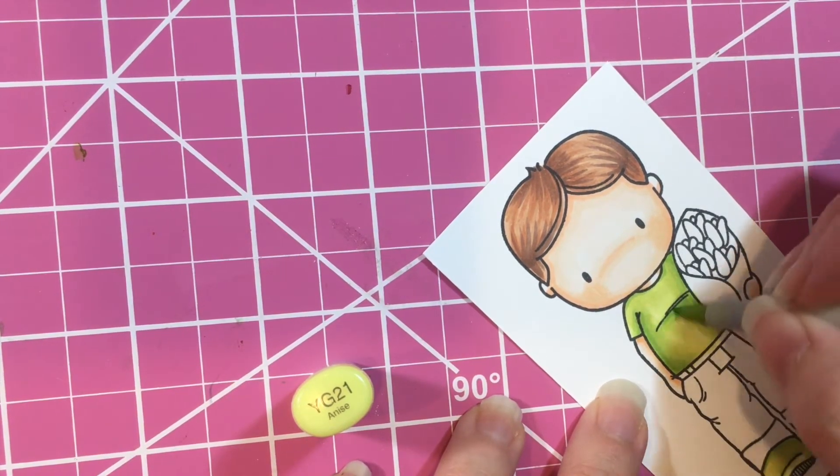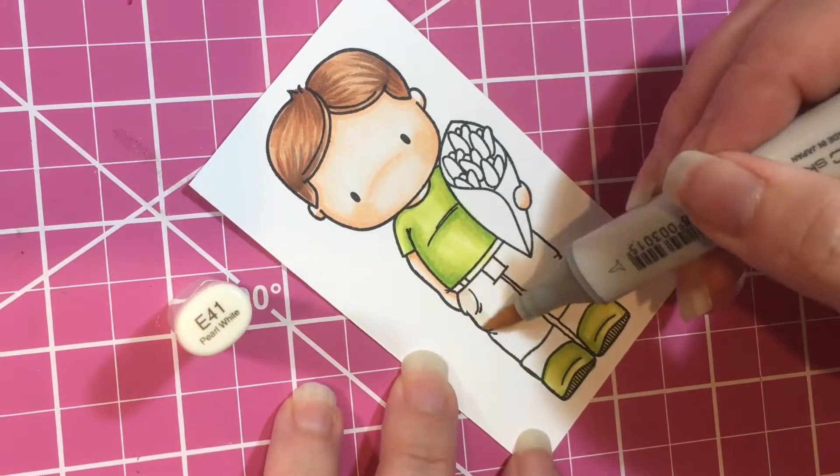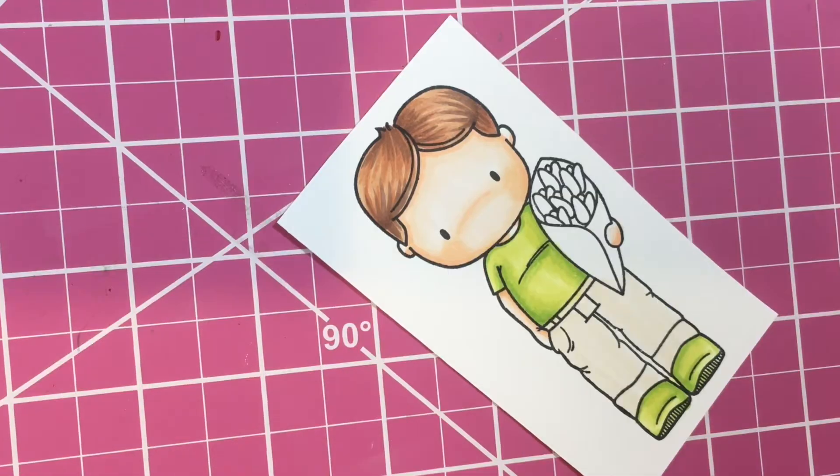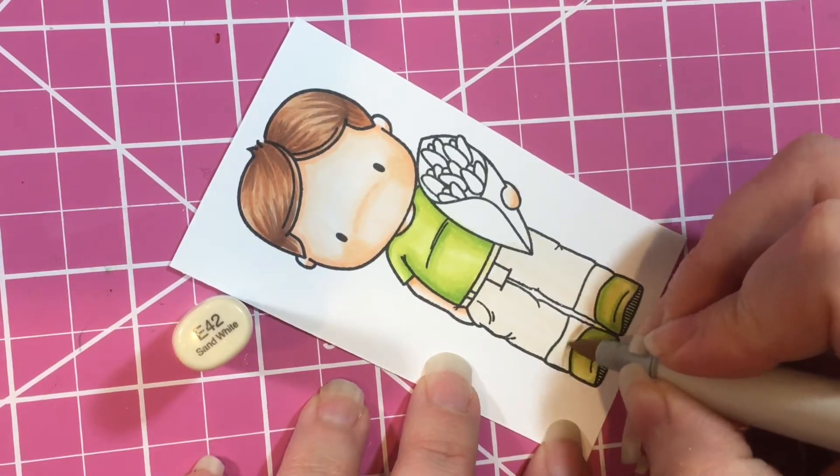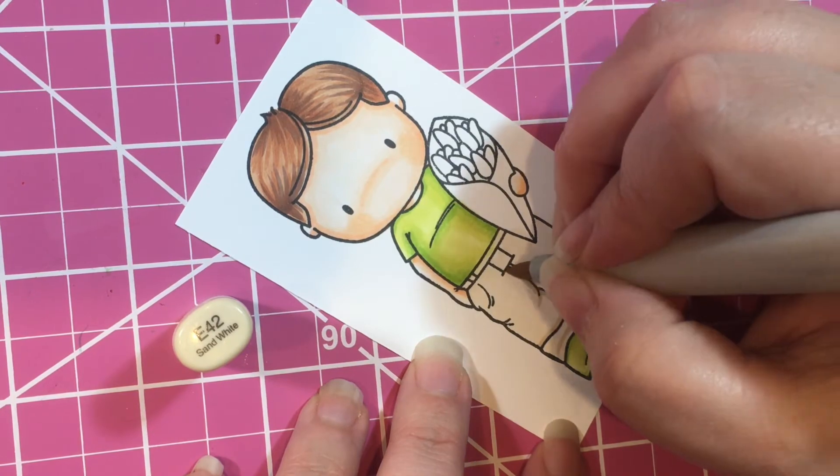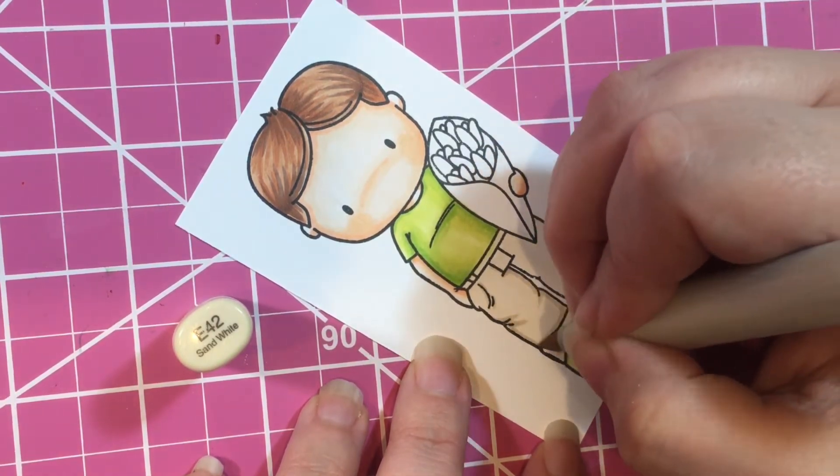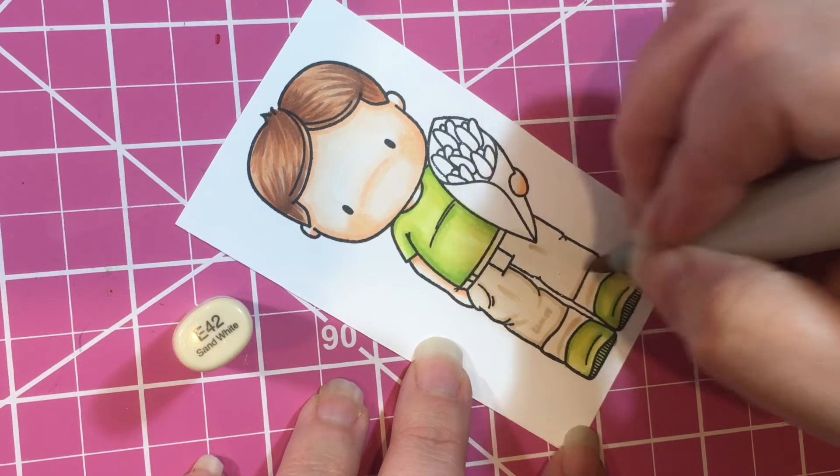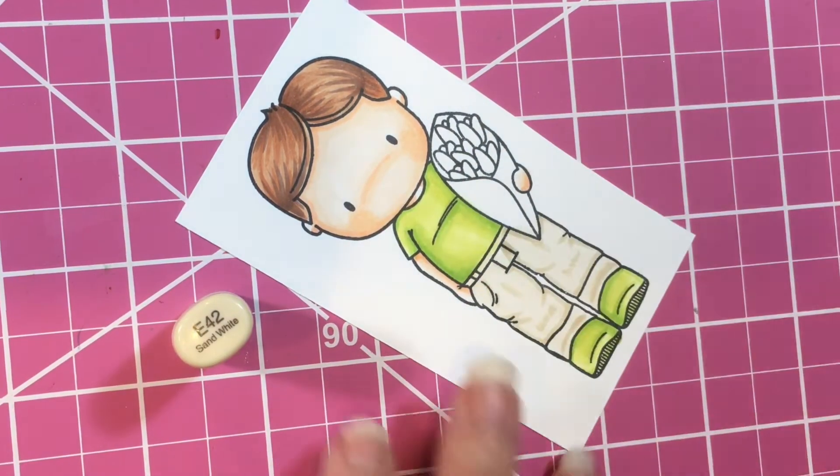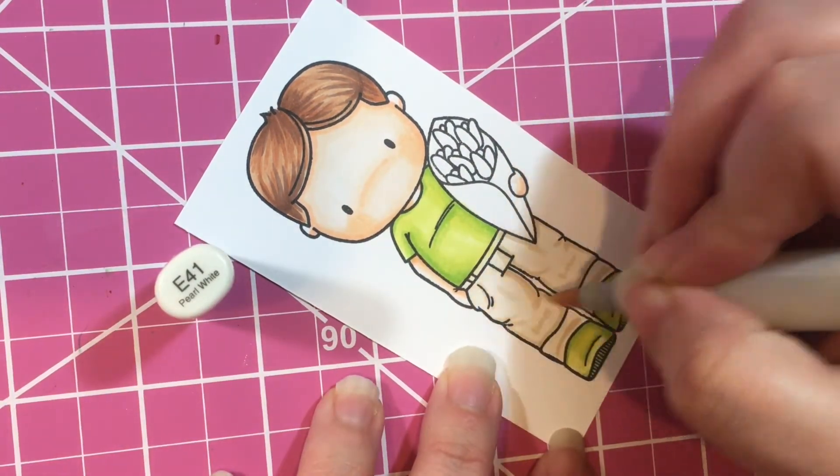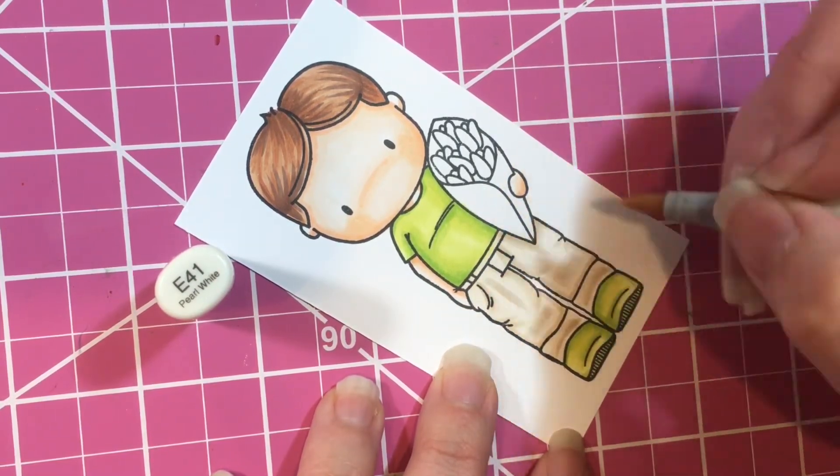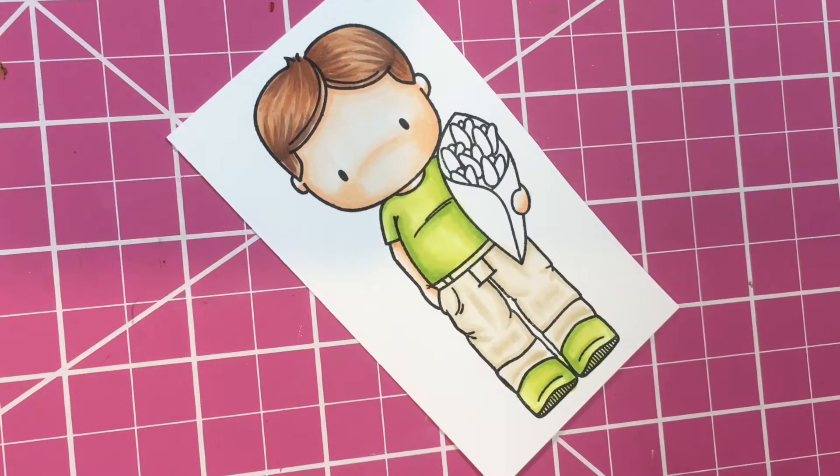We're going to move on to his pants. For his pants I wanted to give him kind of khakis, so I went with E41 and E42. I based it with the E41 and then came in and added shadowing with the E42. On his little pant cuff that goes over the top of his shoes, I wanted to make sure I didn't put the coloring right down on top of his shoe. I wanted it to be a little bit higher. Then I added shadowing on the bottom of his pants towards his ankle and also along his pant leg and the sides.